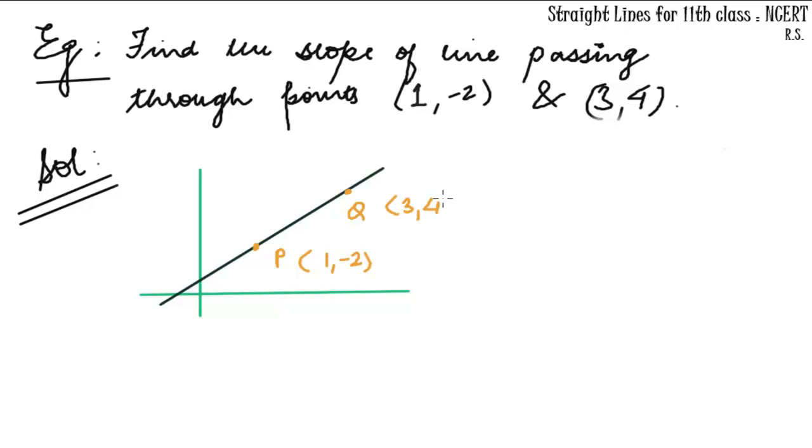What will be slope of PQ? It will be Δy upon Δx. Assuming this one is (x1,y1) and this is (x2,y2), what we get is Δy = y2-y1 upon x2-x1.